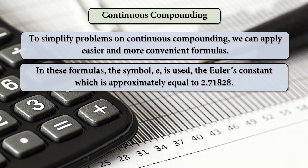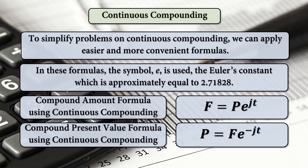To simplify problems on continuous compounding, we can apply easier and more convenient formulas. Aside from the compound amount formula and present value formula under compound interest, there are convenient formulas under continuous compounding. In these formulas, the symbol E is used, called Euler's constant, which is approximately equal to 2.71828. The compound amount formula using continuous compounding is: F equals P times E raised to J times T.